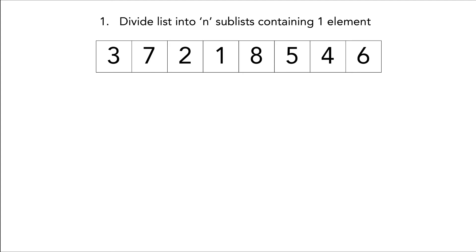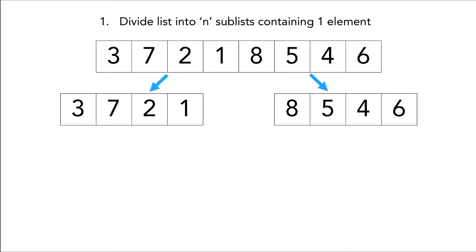Over here we have our array three seven two one eight five four six. The first step of Merge Sort is to divide it into n sublists containing one element. So we're gonna take our array and split it in half.